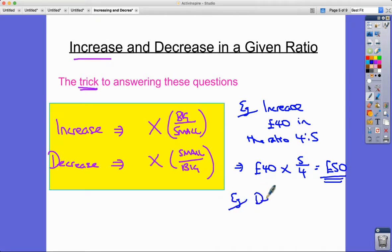All you need to do if it were a decrease question - you guessed it - with the same question but just decrease, then you would just go £40 times 4 over 5, which would be equal to £32.